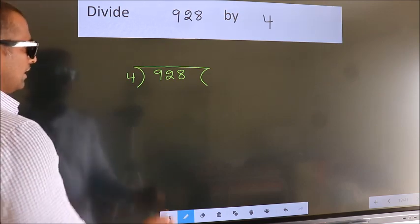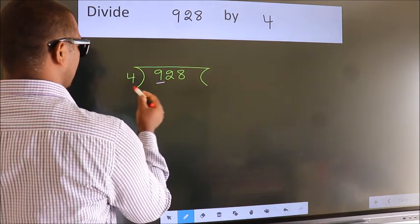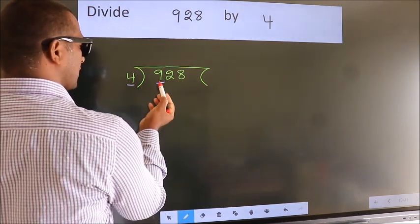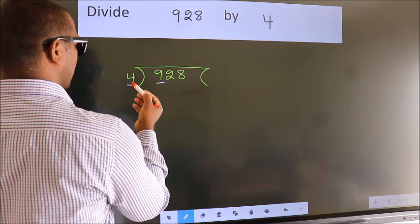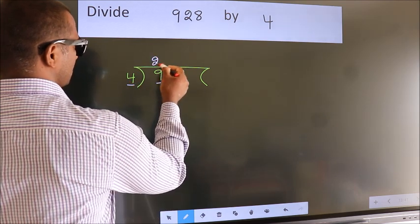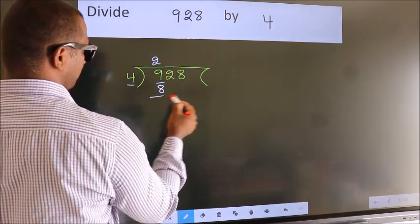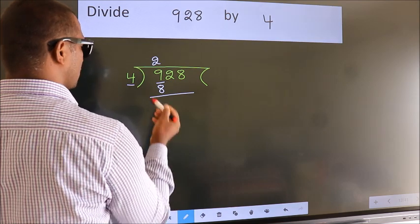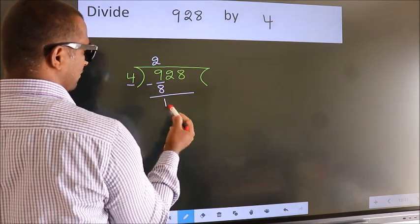Next, here we have 9, here 4. A number close to 9 in the 4 table is 4 twos, 8. Now we should subtract. We get 1.